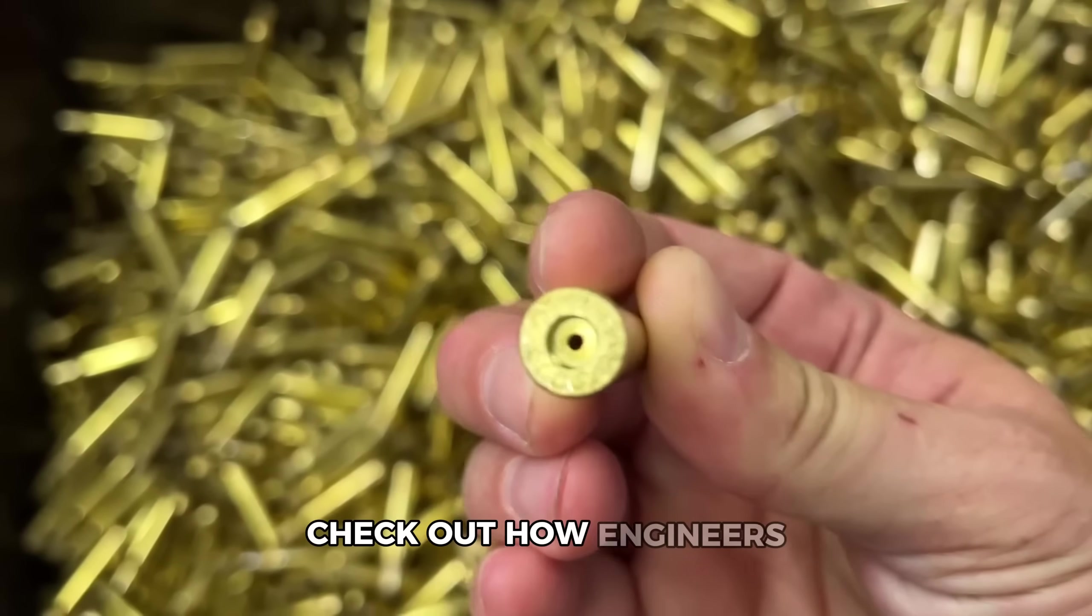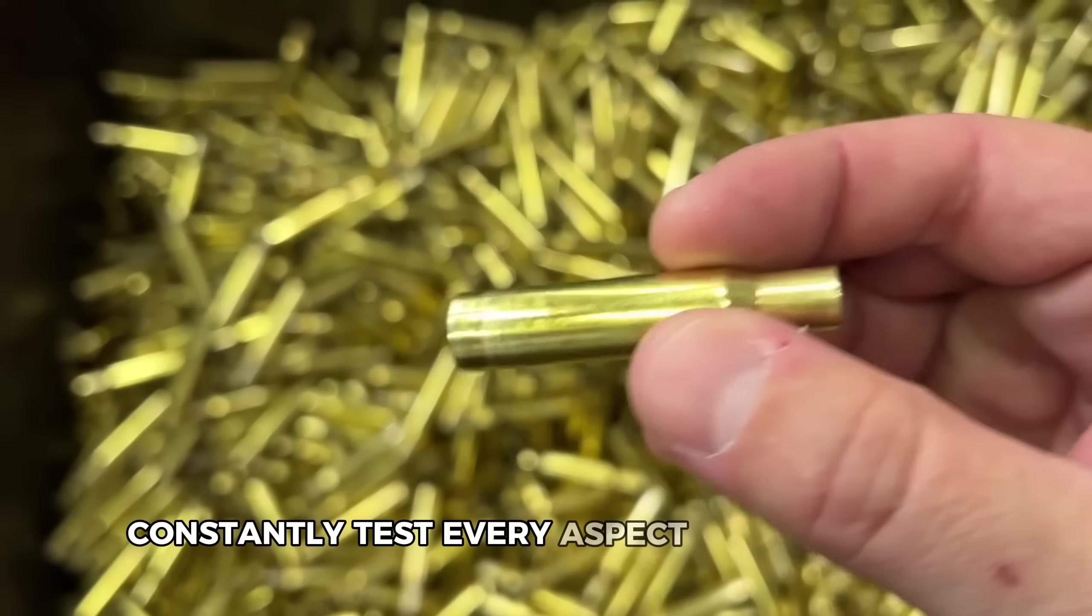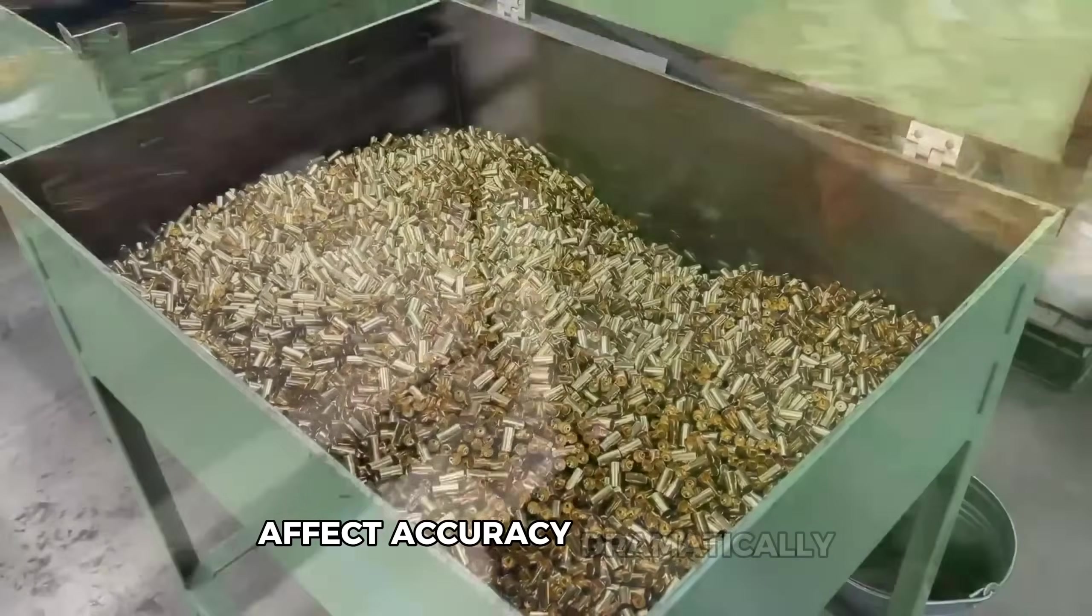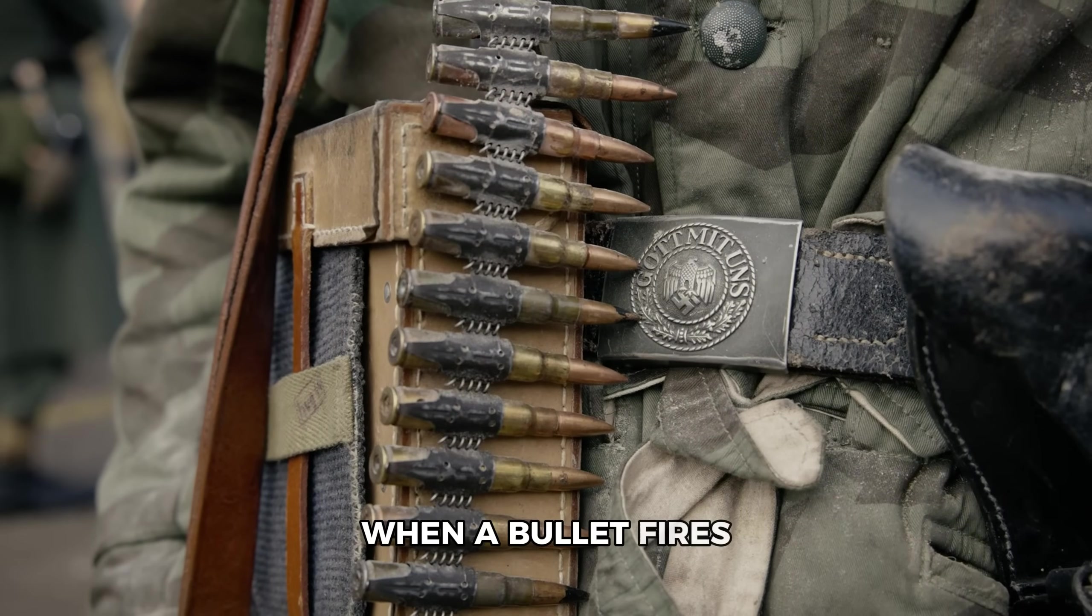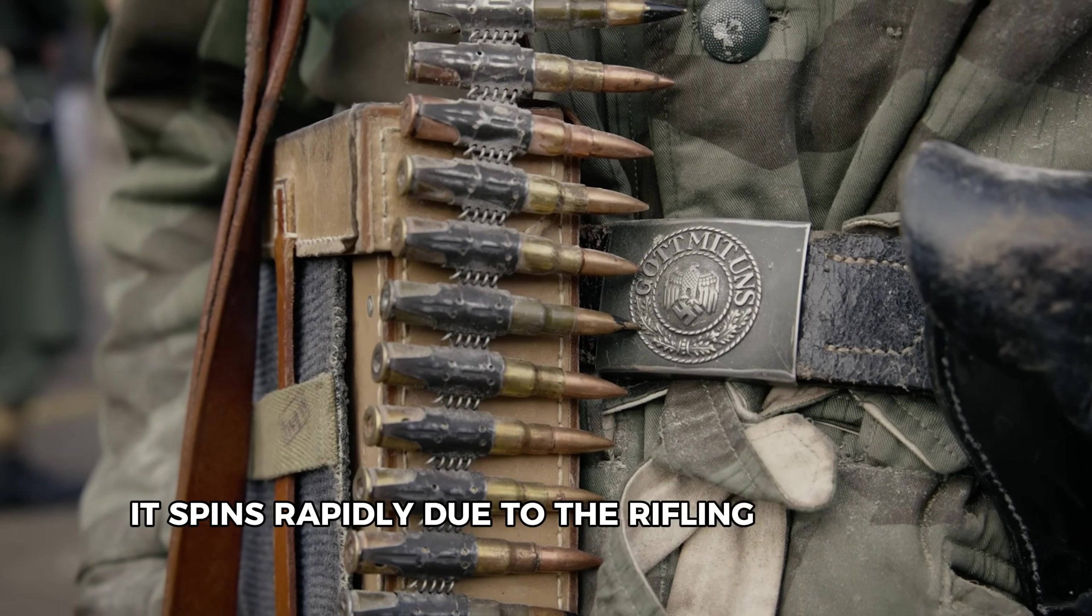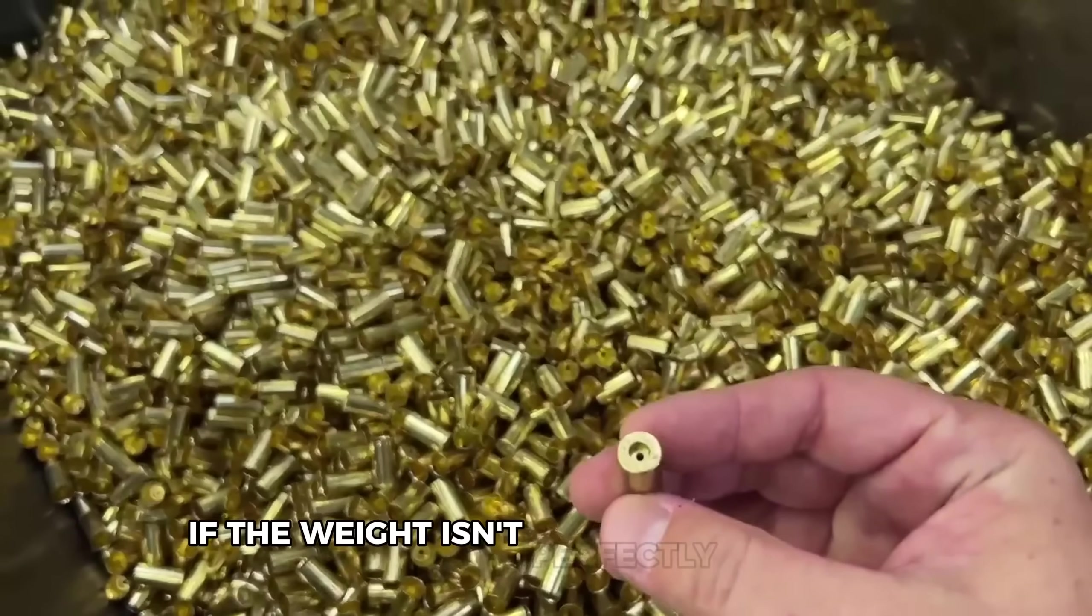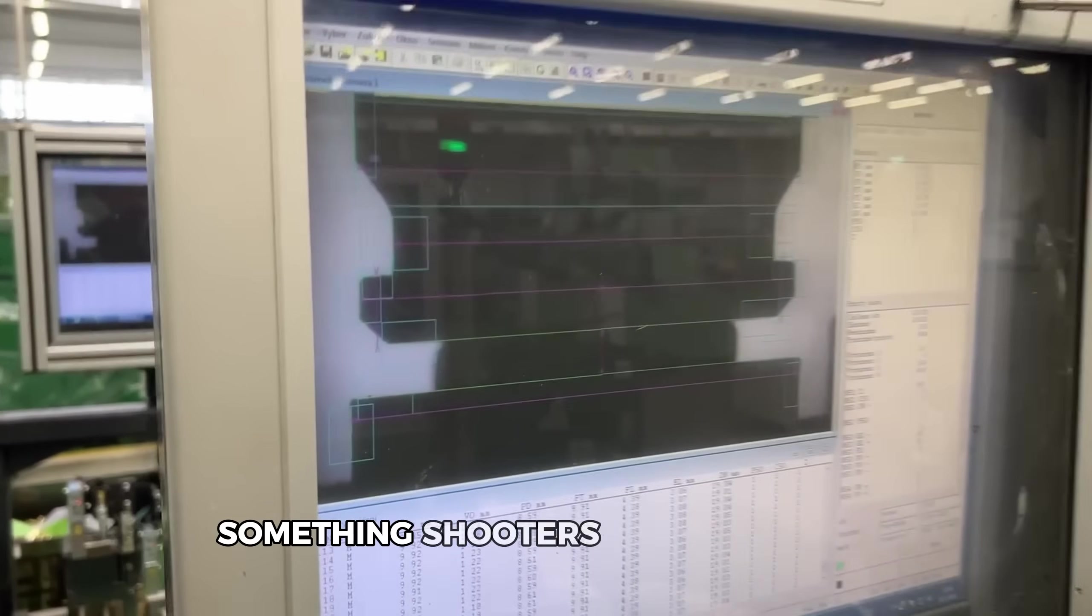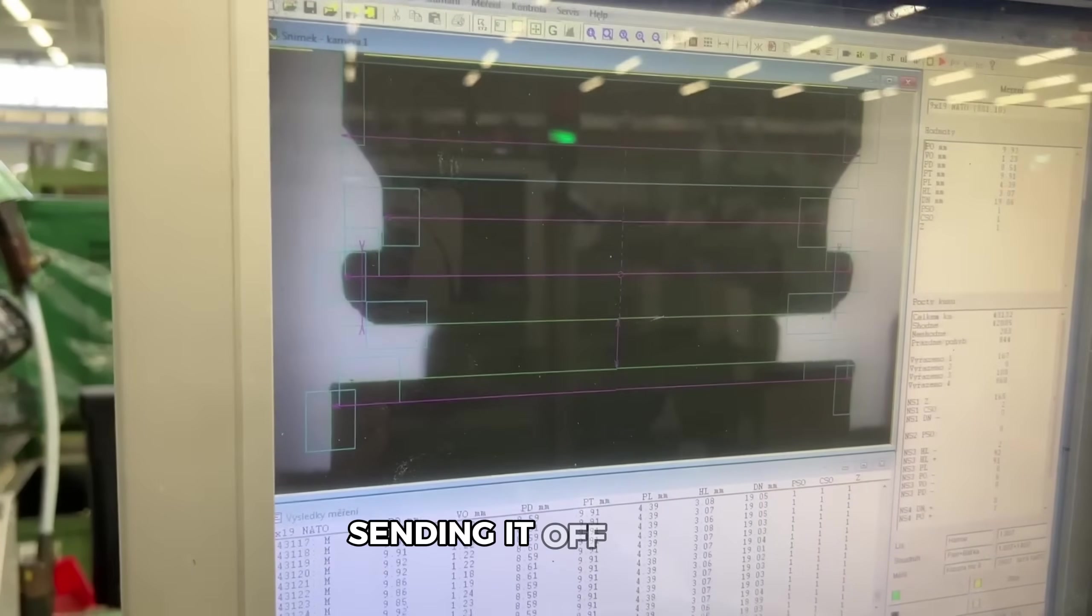Check out how engineers constantly test every aspect of the bullets. Even tiny variations in weight distribution affect accuracy dramatically. When a bullet fires, it spins rapidly due to the rifling in the gun barrel. If the weight isn't perfectly balanced around its center axis, the bullet wobbles in flight, something shooters call precession, sending it off target.